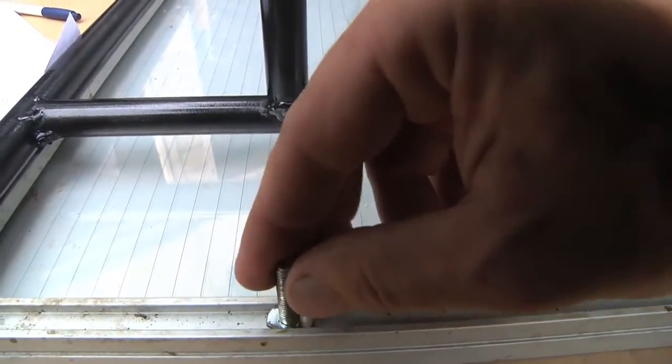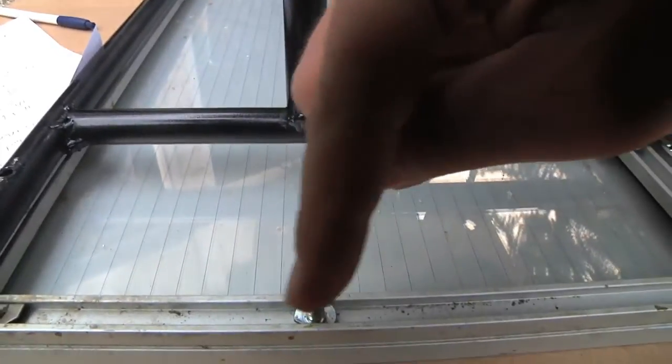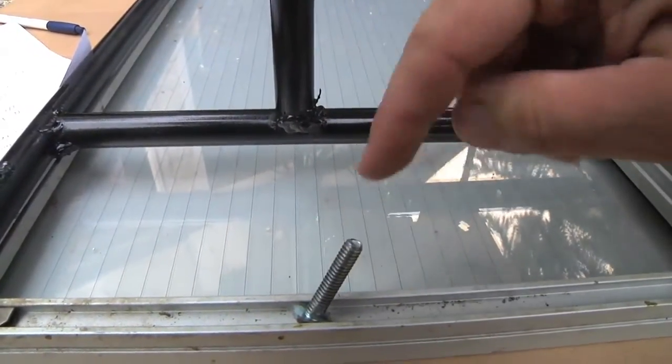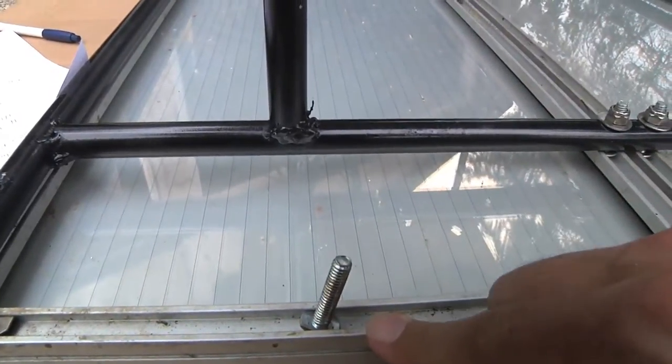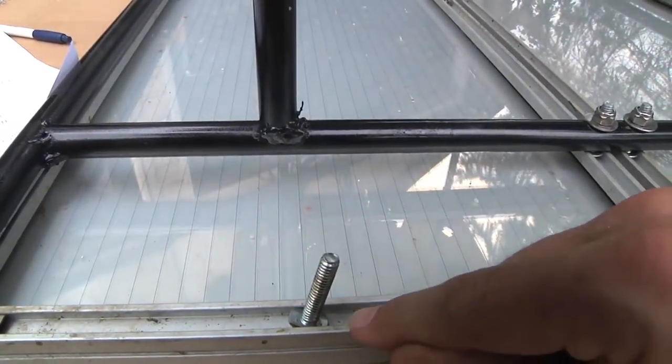We turn it clockwise because when it gets tightened down, that nut's gonna go clockwise on there. So what we do is get this into the frame first. We'll have the power wheels right side